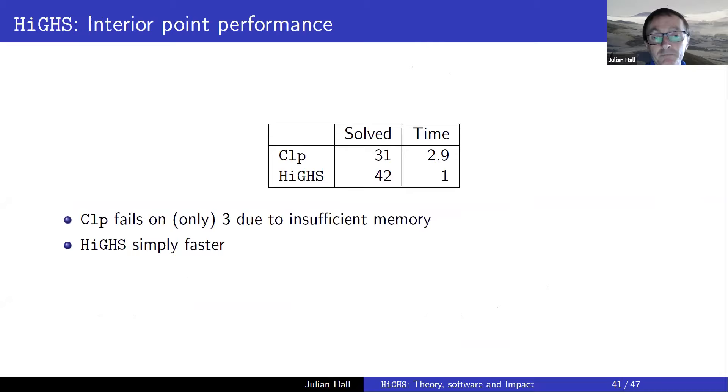Interior point performance. I've compared with CLP. CLP is a traditional interior point solver which uses a direct Cholesky decomposition. CLP only fails on three problems because of lack of memory. Lucas Schork's interior point solver never runs out of memory because it's iterative. And HiGHS is quite simply faster, a factor of about three.